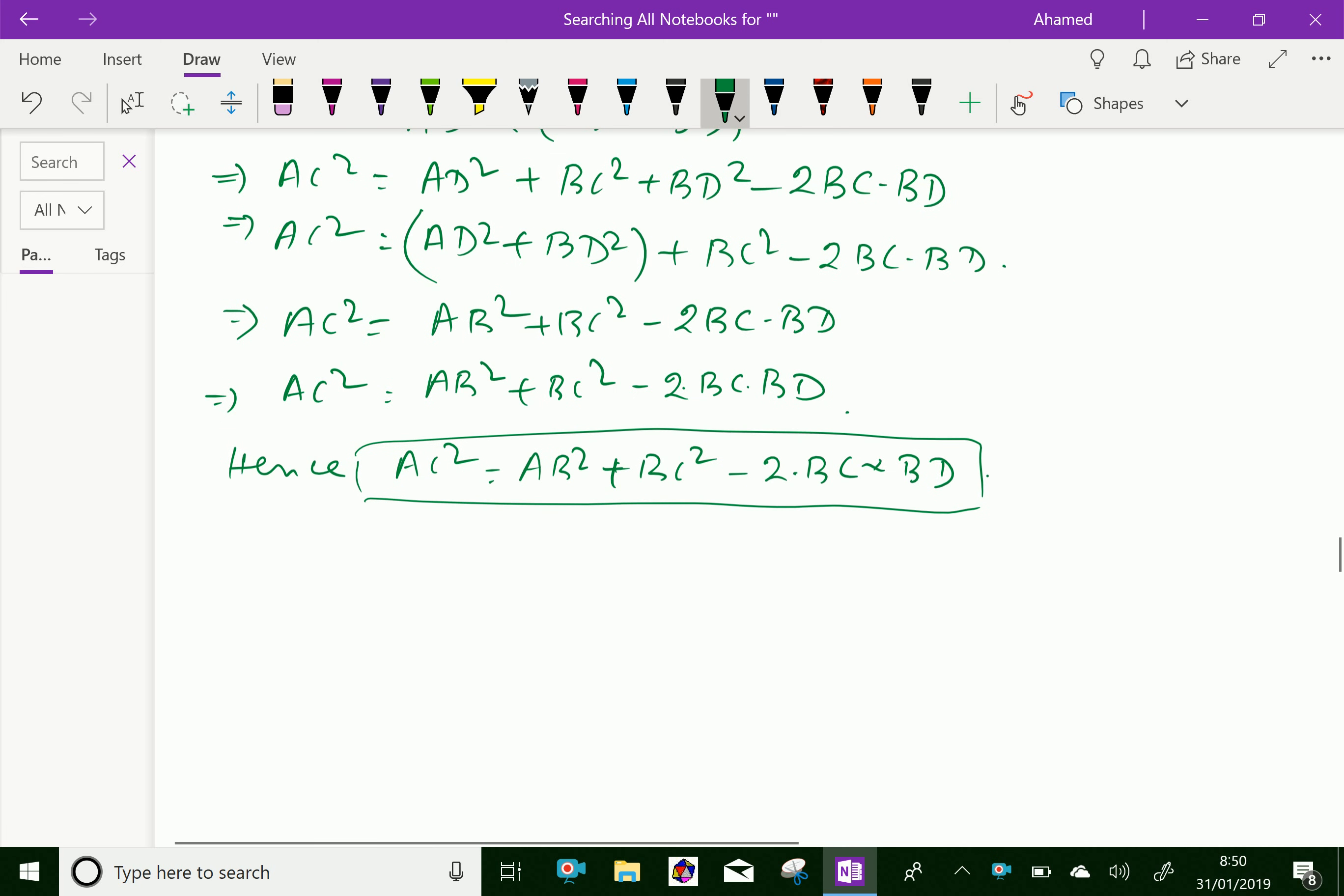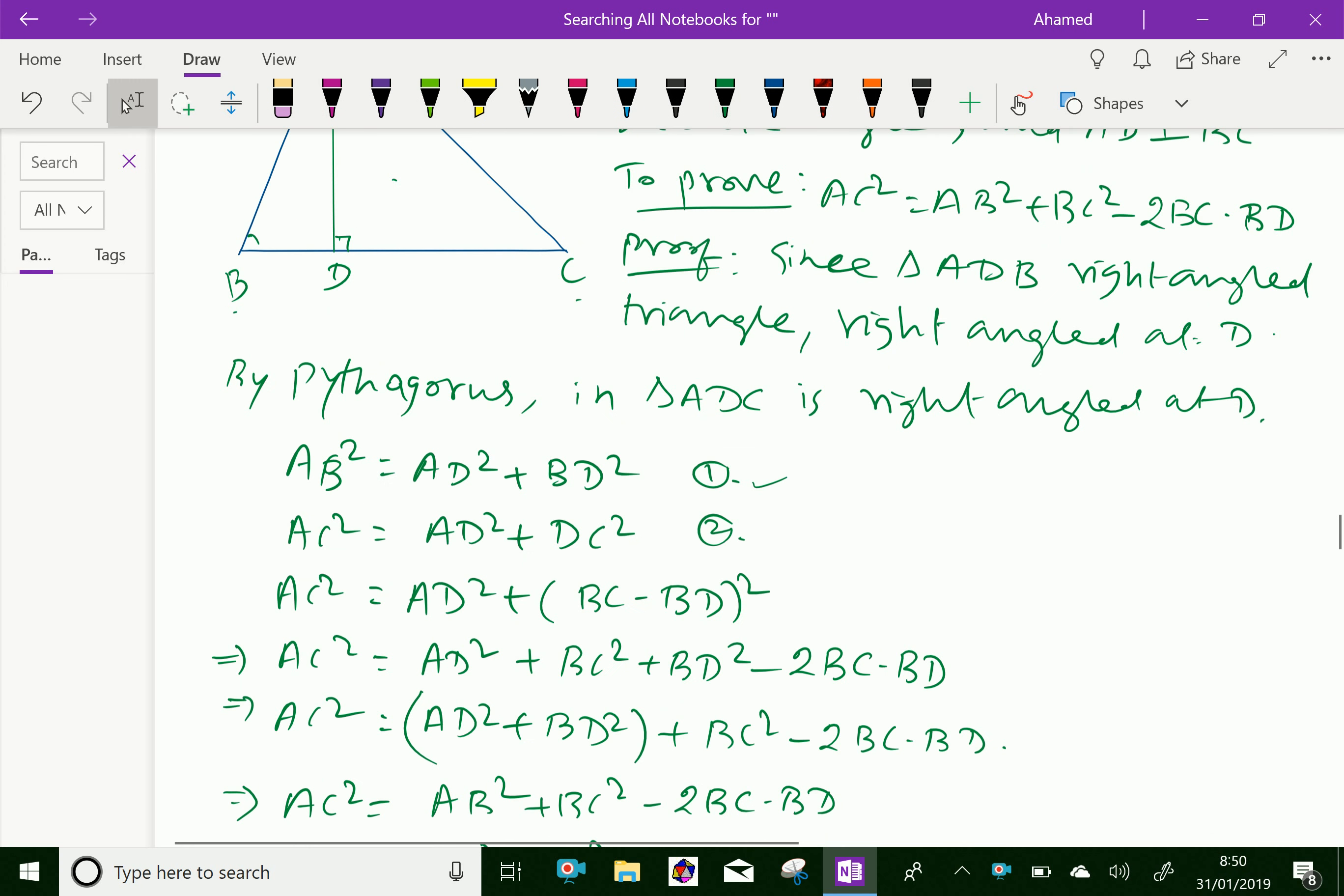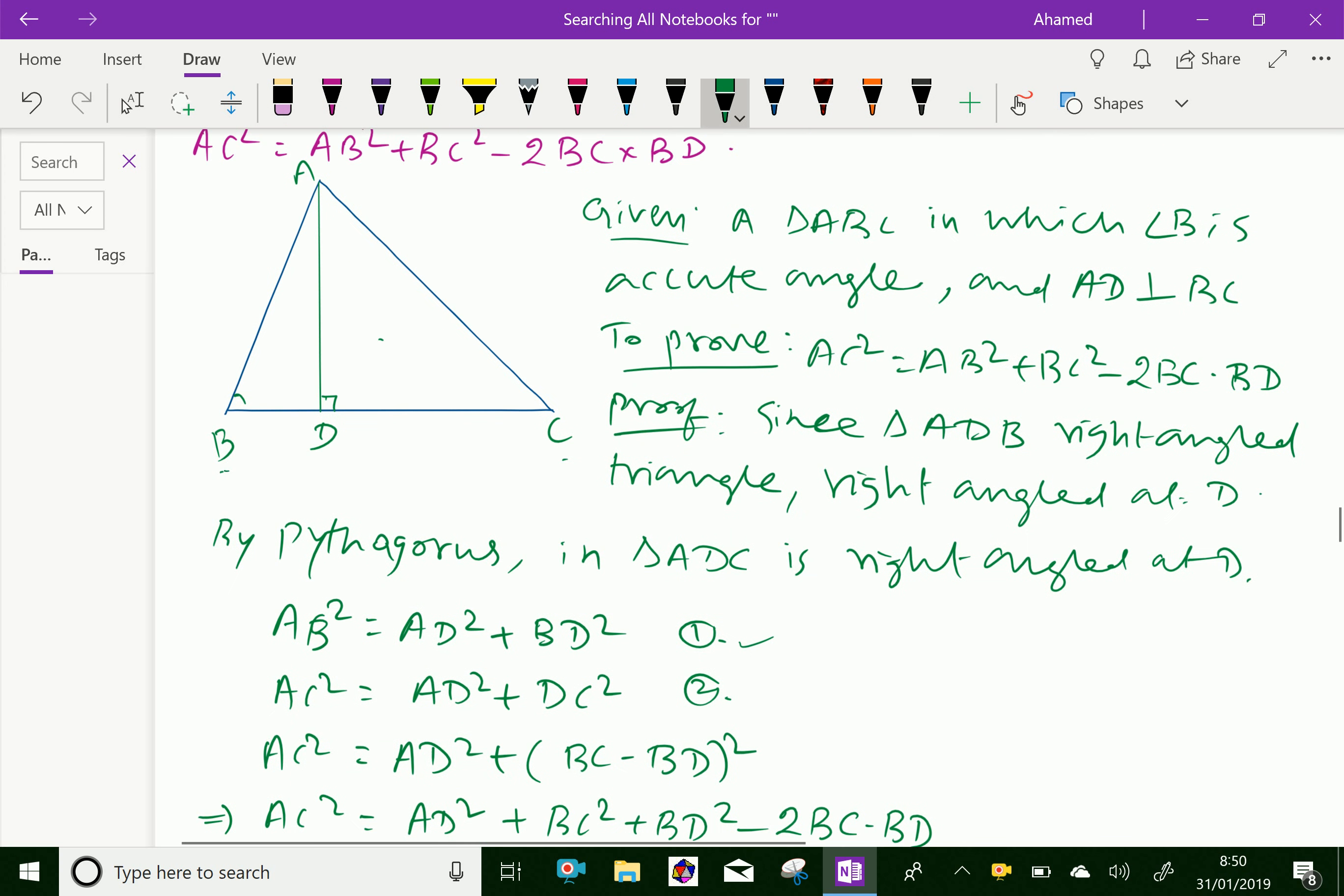Note: In the above theorem, BD is known as the projection of AB. Here, BD is the projection of AB on BC.